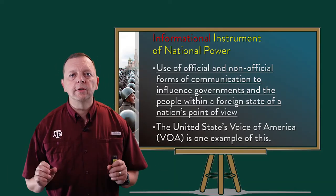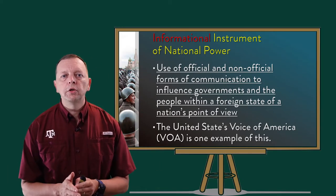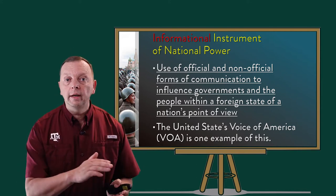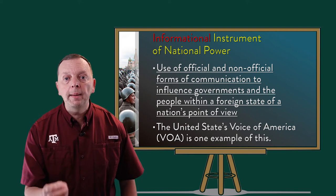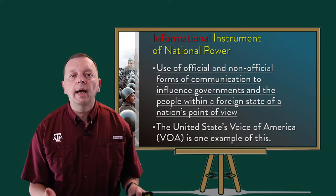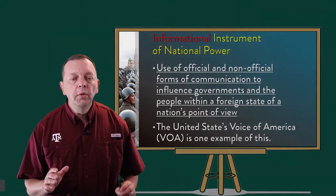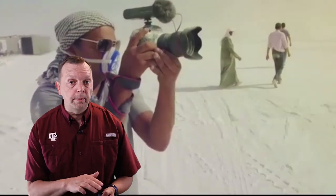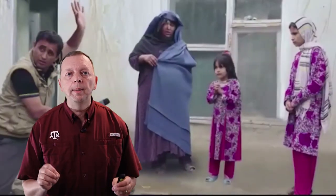The second instrument of the DIME is information. The information instrument of national power uses both official and non-official communication to influence not only governments but the people of those governments. An example of how the government can use information to influence the people of a country is the United States Voice of America. Through Voice of America, the United States attempts to broadcast news stories into countries that may not have a free press. This not only attempts to weaken the power of totalitarian governments, but also gives the people of those countries a positive impression of the United States — therefore, the United States is using information as an instrument of national power.